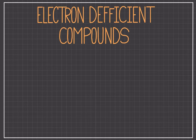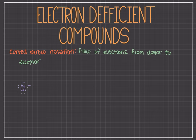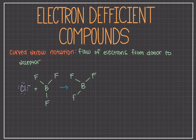Now comes the curved arrow notation. This is a really important symbolic notation that is used for keeping track of electron pairs in chemical reactions. The notation describes the flow of electrons from an electron donor, a Lewis base, to the electron acceptor, a Lewis acid. So the electron flow is shown by the curved arrow drawn from the electron source to the electron acceptor. Going back to our original example of the chloride ion and the boron trifluoride, we can redraw it to see the electrons on the chloride ion becoming the bond between the chloride and the boron.